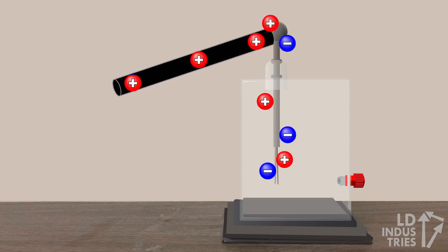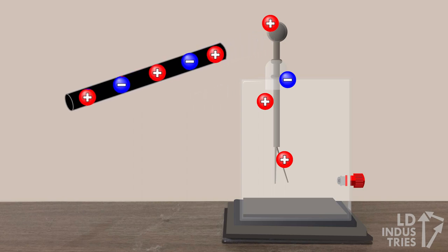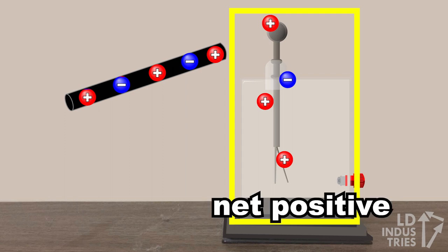electrons in the neutral electroscope will be attracted to the positive rod and will move from the electroscope to the rod. This leaves fewer electrons in the electroscope, meaning that there is now more protons than electrons remaining, and the electroscope is net positive.